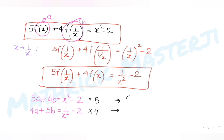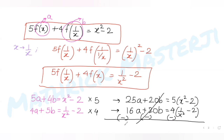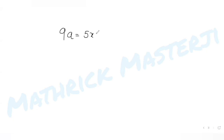To eliminate b, I multiply the first equation by 5 to get 25a + 20b = 5(x² − 2), and multiply the second by 4 to get 16a + 20b = 4(1/x² − 2). Subtracting, the 20b terms cancel, leaving 9a = 5x² − 10 − 4/x² + 8.